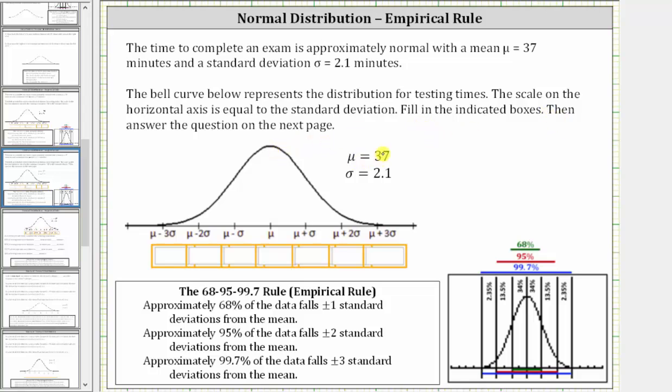Let's begin with the mean or mu, which is in the center of the distribution. And because sigma, or the standard deviation, is 2.1, mu plus sigma is equal to 37 plus 2.1, which is 39.1.